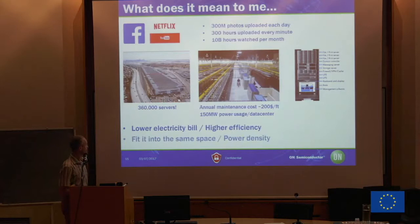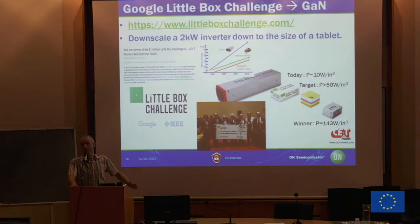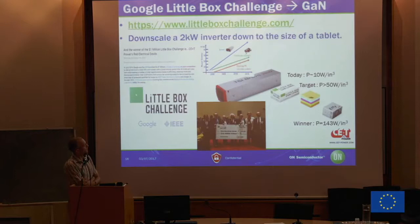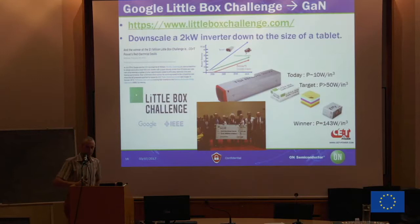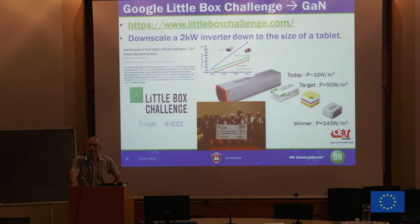A very good example is the Google Little Box Challenge. Google recognized the problem with their server farms and said, look, we need a more efficient solution — lower costs for maintaining our server farms. According to Google, the research was not fast enough, so they put out an open competition — the Google Little Box Challenge — in 2014. This is the size of a 2 kilowatt inverter. An inverter is an electronic system that transforms DC energy from a battery or solar panel into an AC signal. Today it's like 10 watts per cubic inch. Google said the target is 50 watts per cubic inch, and we give $1 million to the winner.